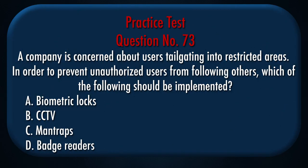Question number 73: A company is concerned about users tailgating into restricted areas. In order to prevent unauthorized users from following others, which of the following should be implemented? A. Biometric locks. B. CCTV. C. Mantraps. D. Badge readers.